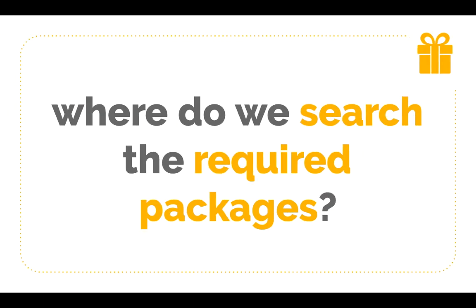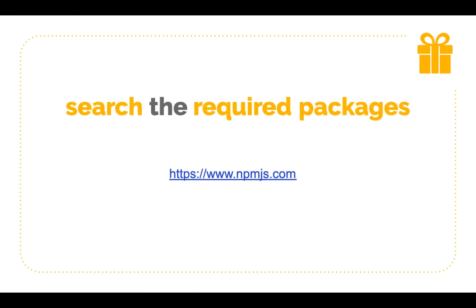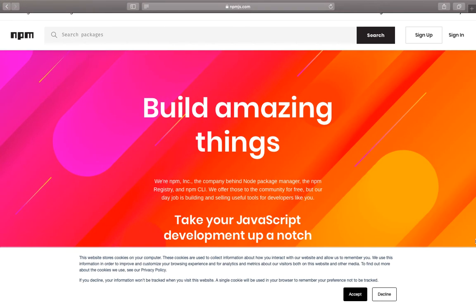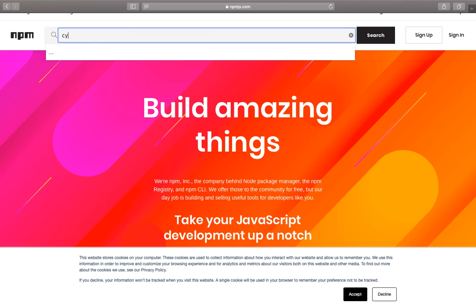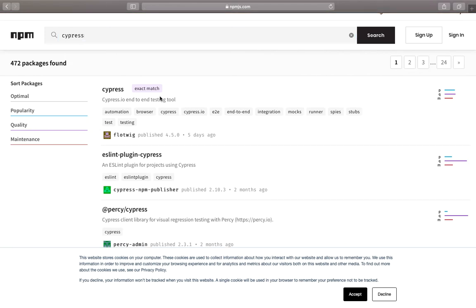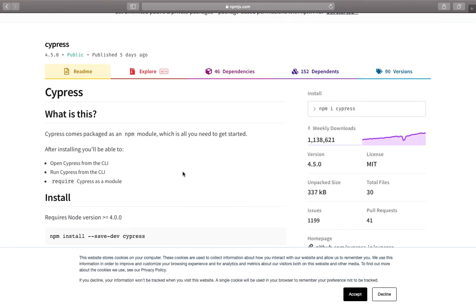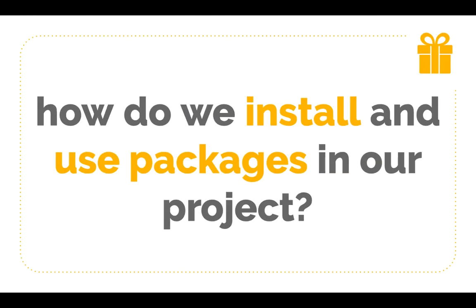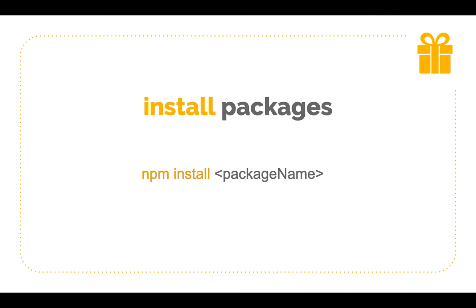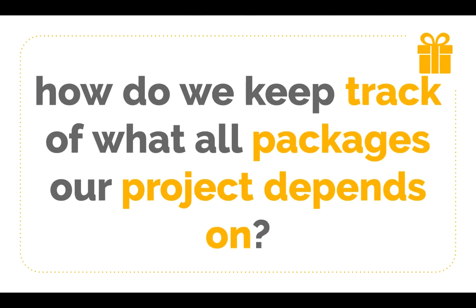But where do we search for the required packages? This is the website — you can search for any package that has been published on npm here. Now, how do we install and use them in our projects? Using this simple command, the package will be installed in your project and will be available for use. But how do we keep track of all the packages our project depends on?